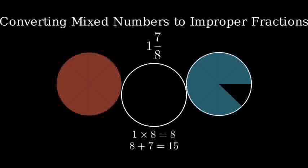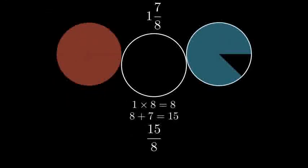Then add this to the numerator. 8 plus 7 equals 15. Keep the same denominator, 8. So our answer is 15 eighths.